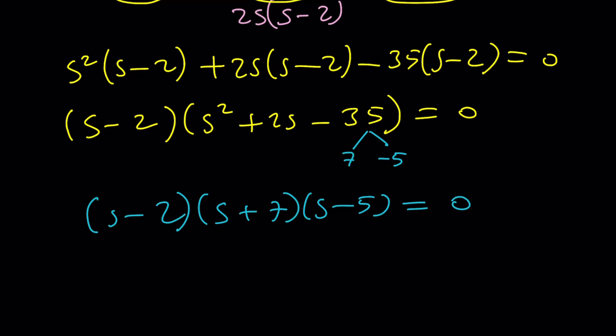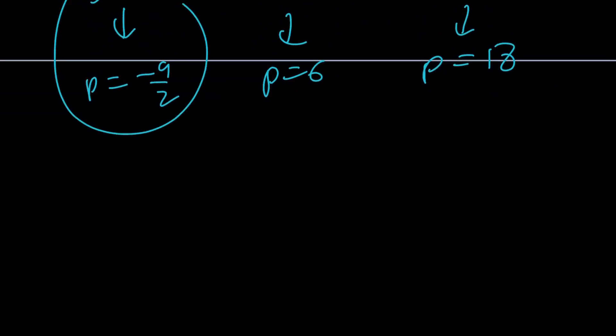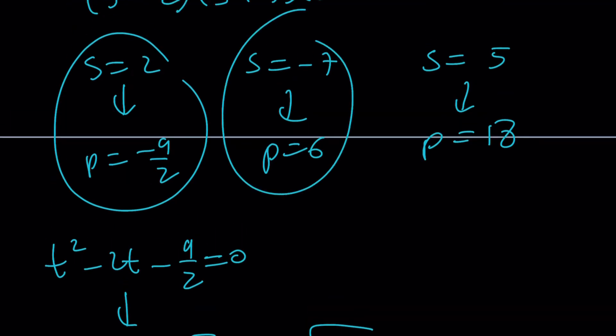Now, what are you going to do? s equals 2, s equals negative 7, and s equals 5. Let me tell you what these give us. p equals negative 9 halves, p equals 6, and then p equals 18. To keep a long story short. Now, here's what happens. The first equation, by the way, you can use Vieta's formulas. We can use Vieta's formulas. t squared minus 2t plus negative 9 halves equals 0. And from here, we get t equals, by the way, t represents x and y here, 2 plus minus root 22 over 2, or 1 plus minus square root of 11 over 2. From here, we get t squared minus 5t plus 6, which gives us t equals 2 and t equals 3. Again, those are x, y values.